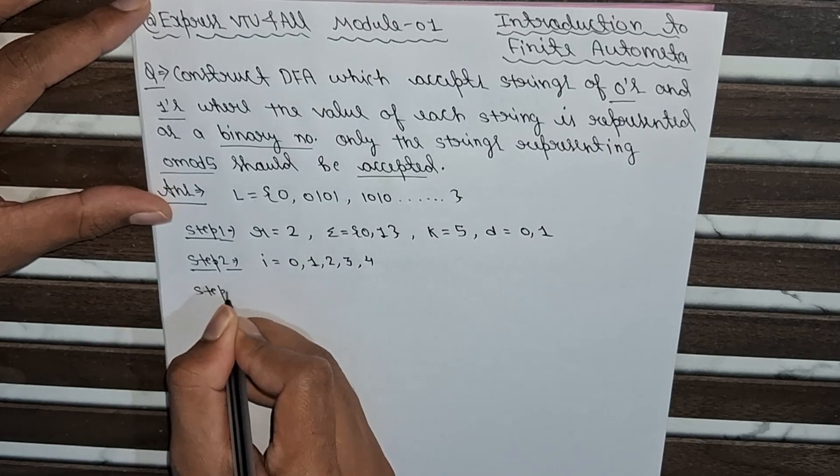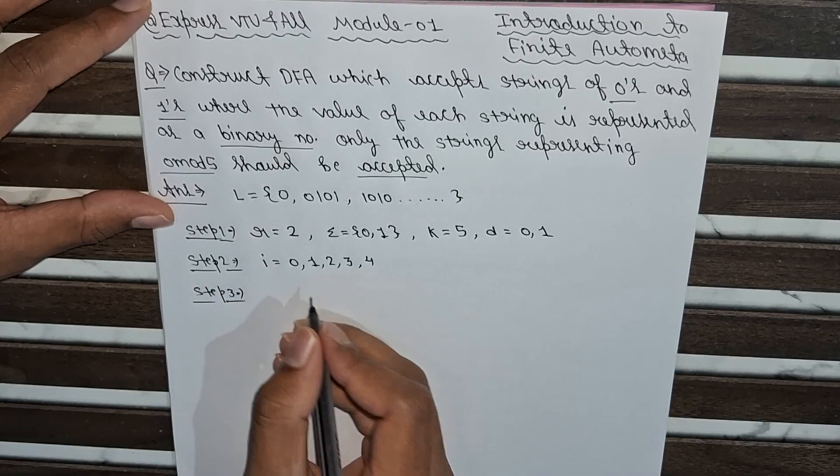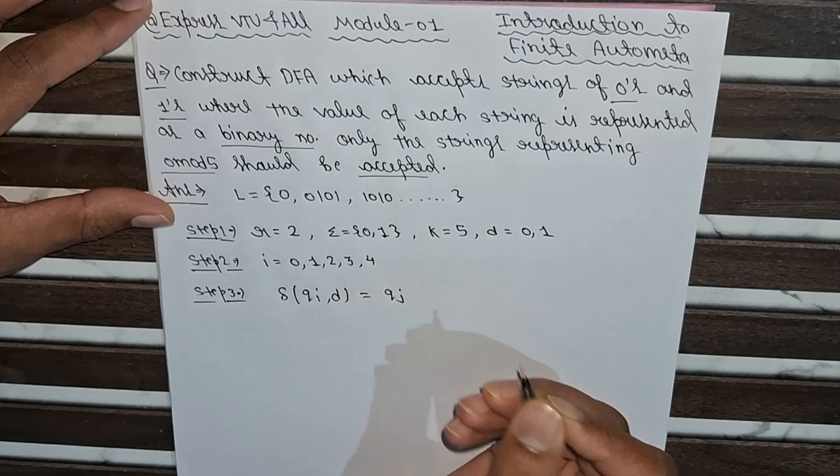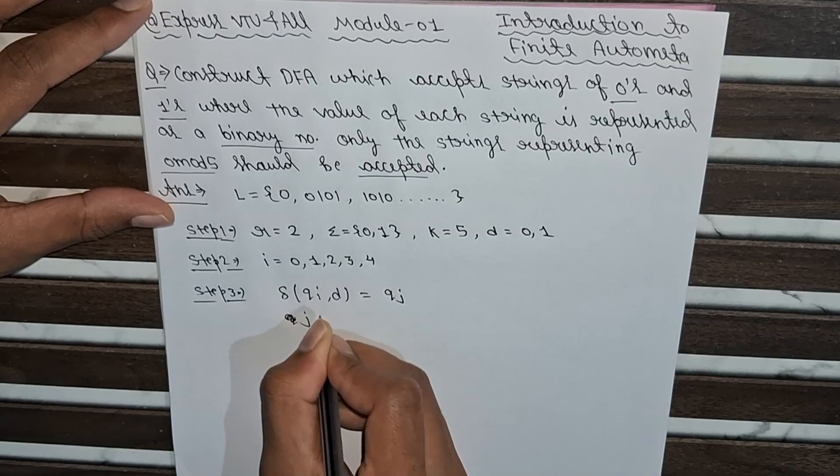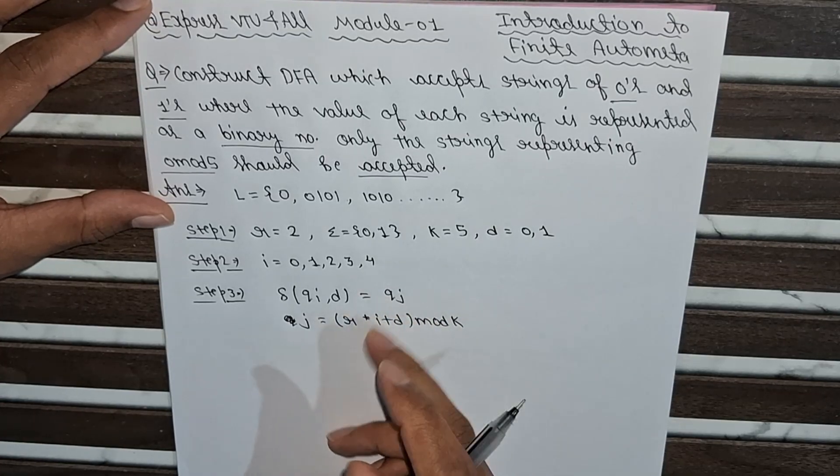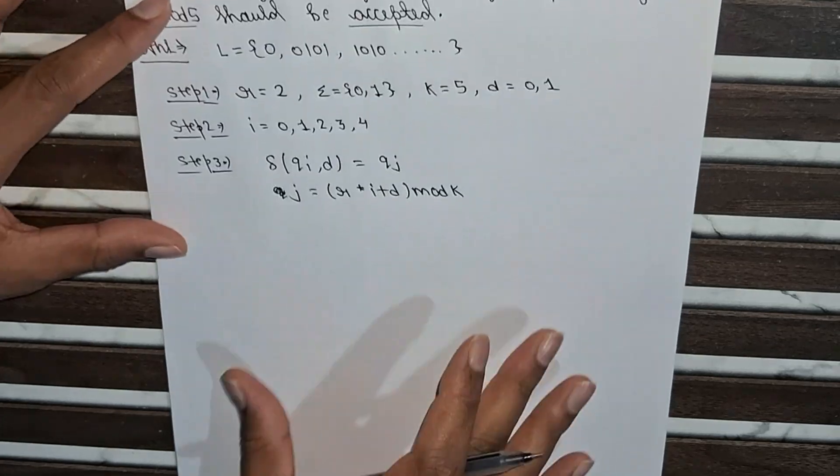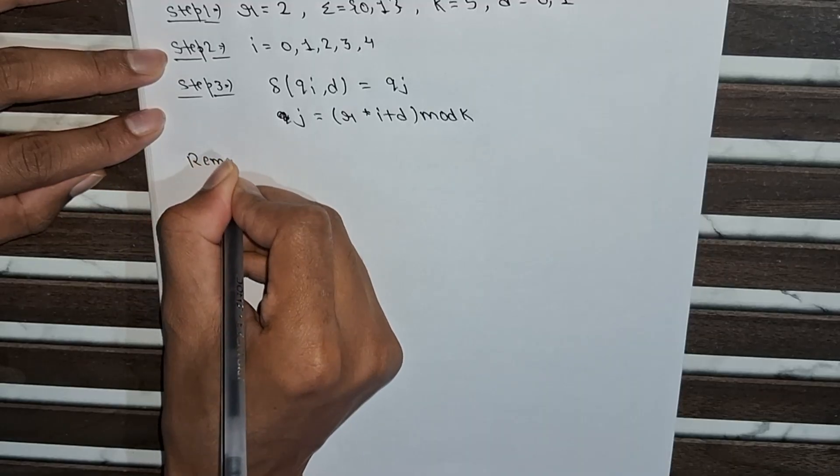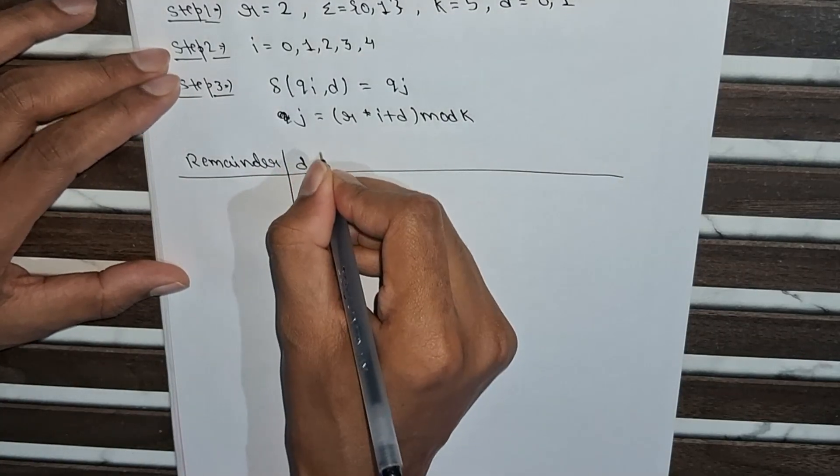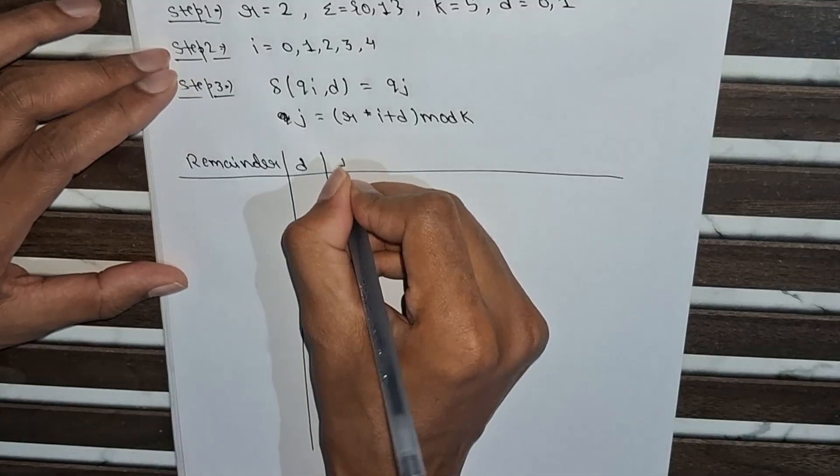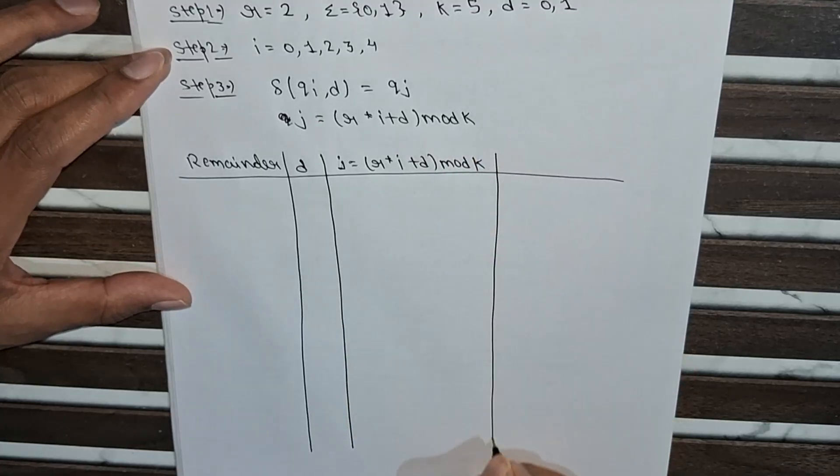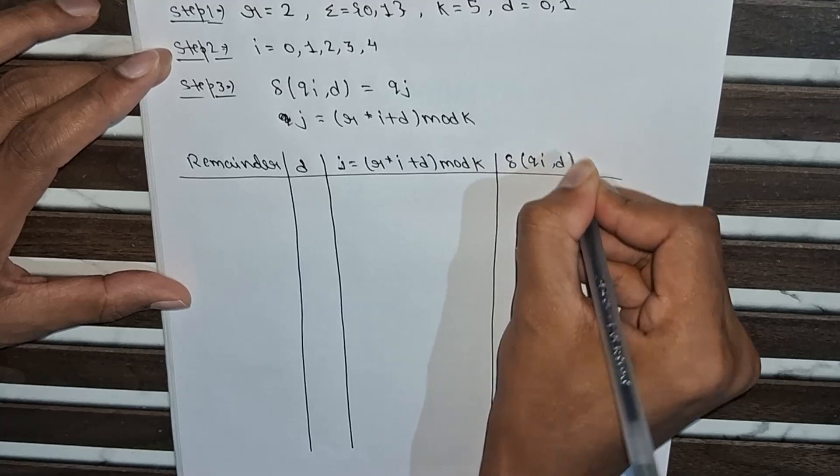Step 3: we are using two formulas. The first formula is: transition δ(qi, d) = qj. And the second formula is: j = (r × i + d) mod k. With the help of these two formulas we are going to make a table.